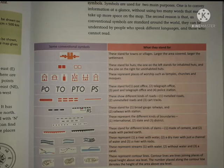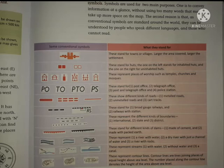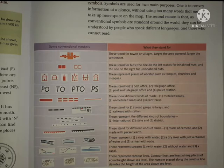Conventional symbols serve two main purposes. First, they convey information in a compact way without using too many words, which would take up more space on the map. Second, conventional symbols are standardized around the world — they can be understood by any person regardless of the language they speak, the country they belong to, or their physical boundaries. No one faces any issue in understanding the symbols used on a map.